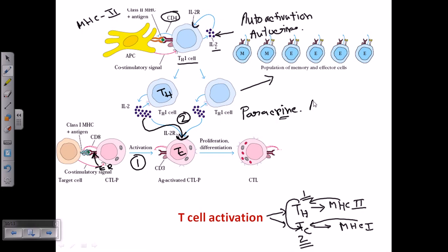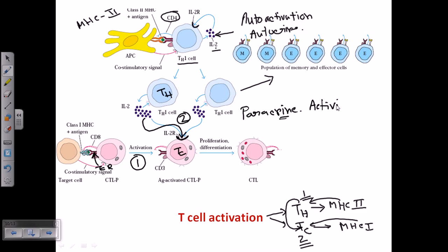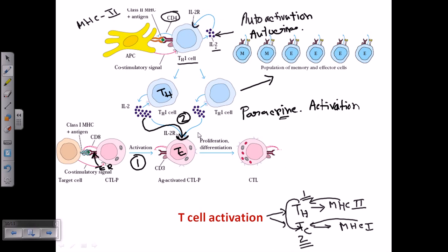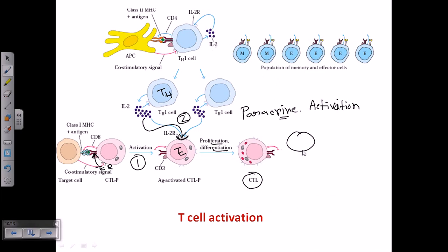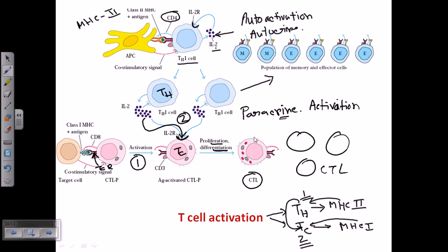So the two key activation types are autocrine and paracrine. After paracrine activation, cytotoxic T-cells receive signals for proliferation and differentiation, producing many more cytotoxic T-lymphocytes in the area. That's how T-cells are activated — I hope that's helpful, thank you.